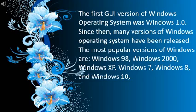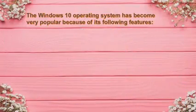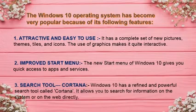Similarly, when you open your mobile phone you see some icons, applications and their logos — this is also GUI. After that, many versions of Windows operating system have been released. The most popular versions are Windows 98, Windows 2000, Windows XP, Windows 7, Windows 8, and Windows 10.